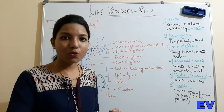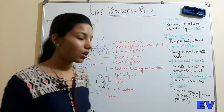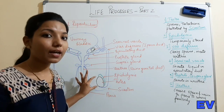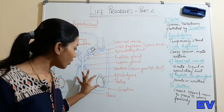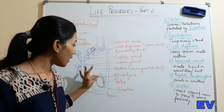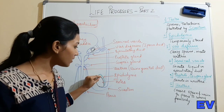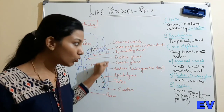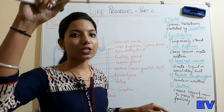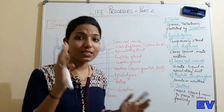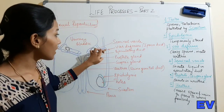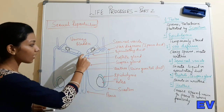To summarize the sequence so far: sperms and male sex hormone testosterone are produced in the testis. Sperms are temporarily stored in the epididymis. Then they start moving through a tube called the sperm duct or vas deferens, which carries them forward.